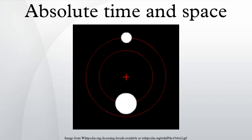Relative, apparent and common time, is some sensible and external measure of duration by the means of motion, which is commonly used instead of true time.